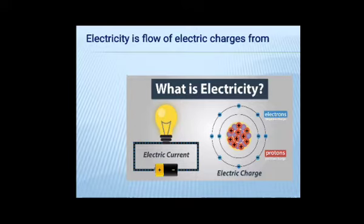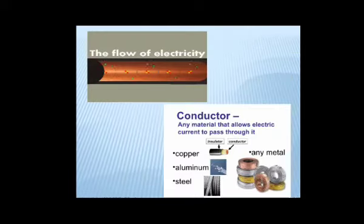Electrons can move in all materials, but they can move through some materials better than others. If electrons can move quickly and easily in a material, that material is called conductor. So, a conductor is any material that allows electric current to flow from one point to another.